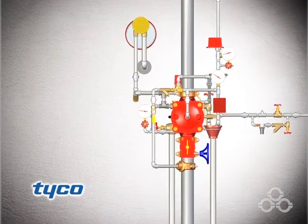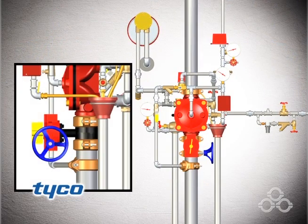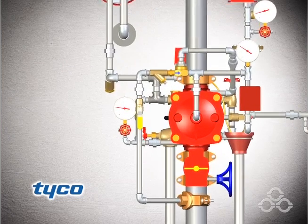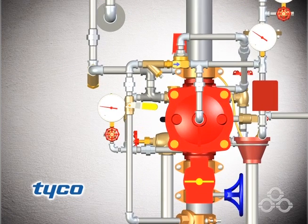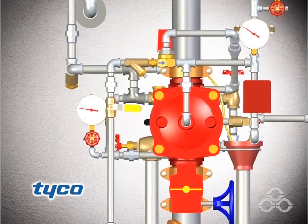To reset the valve after the fire is under control, the main supply control valve is manually closed to shut off the water supply. The diaphragm chamber supply control valve is also closed.